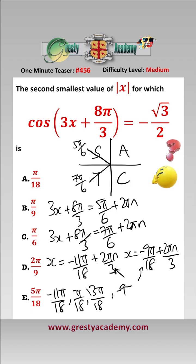we get solutions of minus 9 pi over 18, 3 pi over 18, and 15 pi over 18.